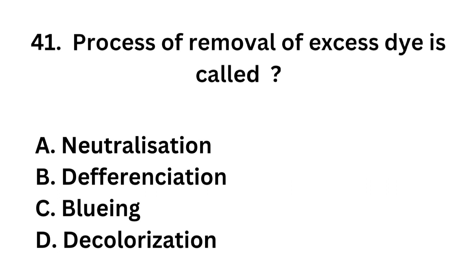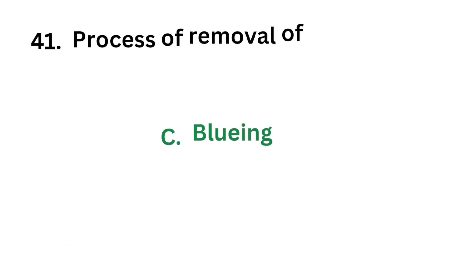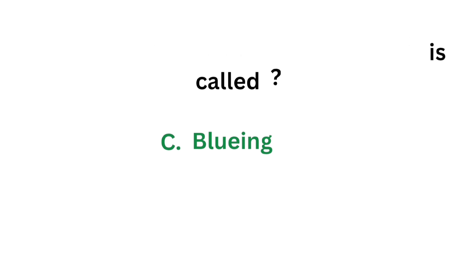Question number 41: The process of removal of excess dye is called? Option A: Neutralization. Option B: Differentiation. Option C: Bluing. Option D: Decolorization. The correct answer is Option C: Bluing. The process of removal of excess dye is called bluing.